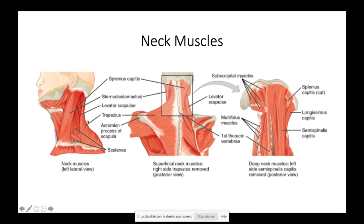Embryologically, the trapezius and SCM start out as one unified muscle. But as the baby grows and the clavicle develops, they split and pull apart into two separate muscles. The sternocleidomastoid gets its name from its origin on the sternum and clavicle and its insertion on the mastoid process — sternocleidomastoid.